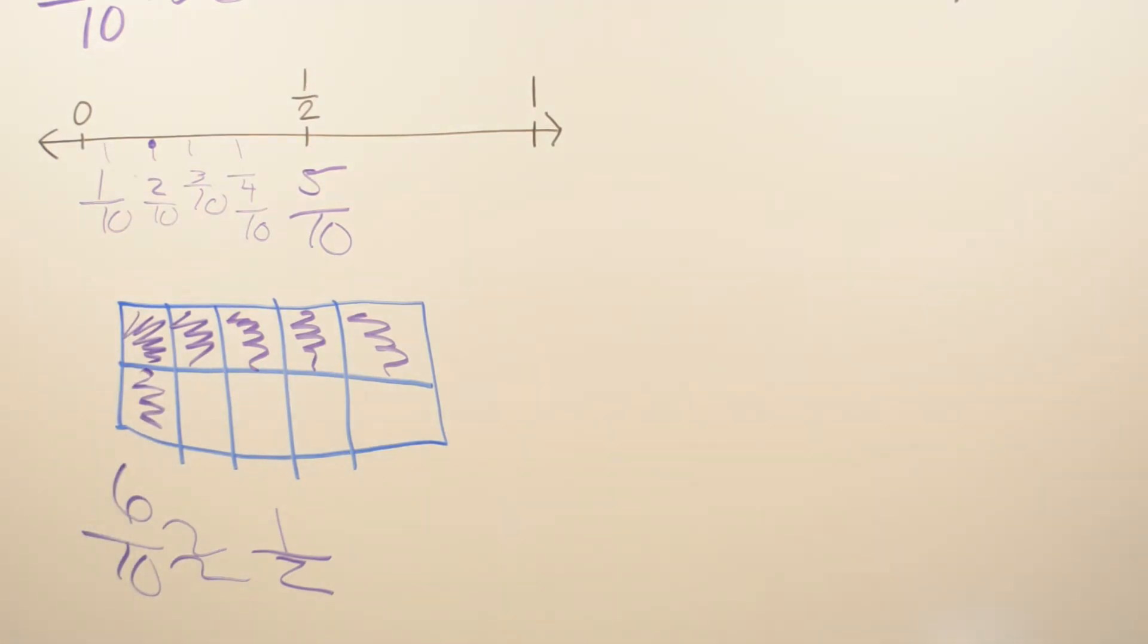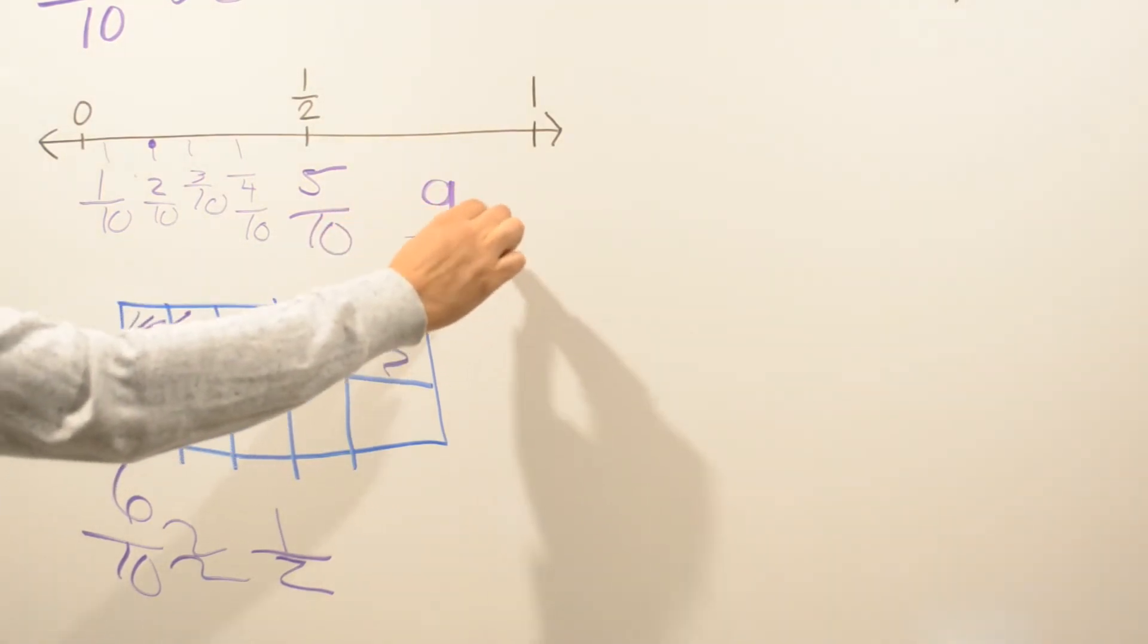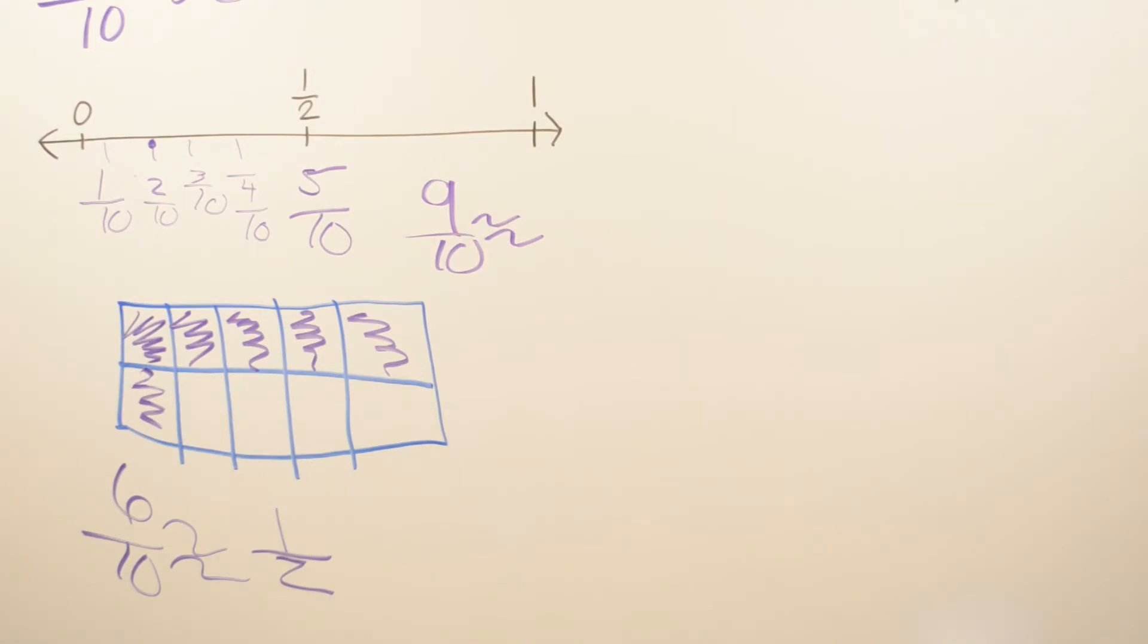Now, if we ask, how about 9 tenths? How about we round 9 tenths? Same way, we can go ahead. We already have 6 boxes shaded, so we just add up 3 more: 6, 7, 8, 9.